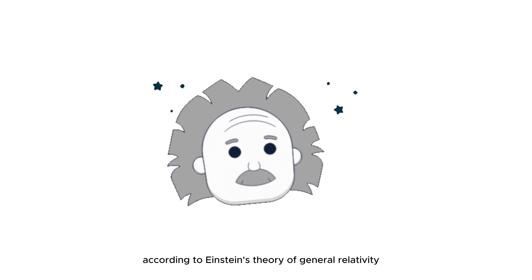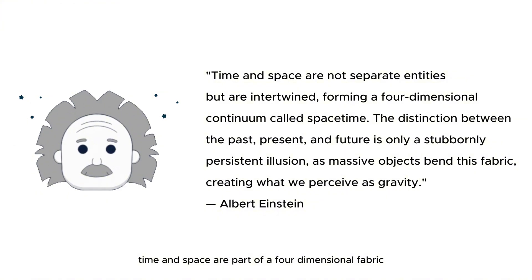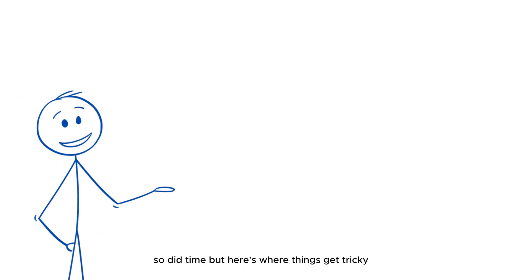According to Einstein's theory of general relativity, time and space are part of a four-dimensional fabric called space-time. So when the universe began, so did time. But here's where things get tricky.